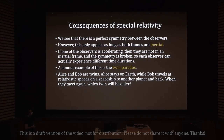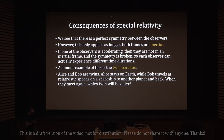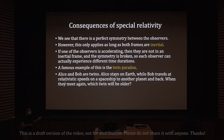This perfect symmetry only applies as long as both frames are inertial. An inertial frame is a frame that is not accelerating. If one of the observers is accelerating, they are not in an inertial frame and the symmetry is broken. Each observer can then actually experience different time durations.